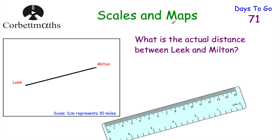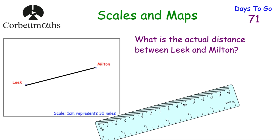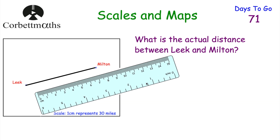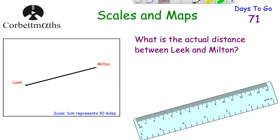To start off, we're going to look at Scales and Maps, then Compass Directions, and then Views. Here we've got a diagram — it's a map with Leake and Milton, two made-up towns, and we've got the scale that one centimetre represents 30 miles. The question says: what is the actual distance between Leake and Milton? To find that, we measure the distance on the page. You get your ruler, measure as accurately as you can — and that's 8 centimetres.